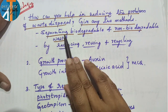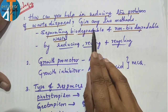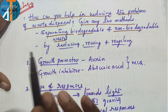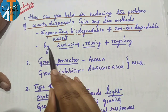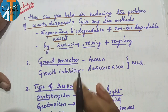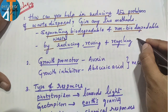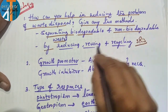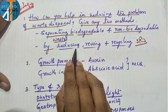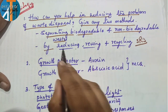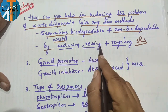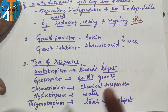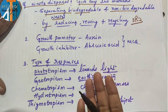How can you help in reducing the problem of waste disposal? By separating biodegradable and non-biodegradable waste, and by following the 3 Rs: Reducing, Reusing, and Recycling.